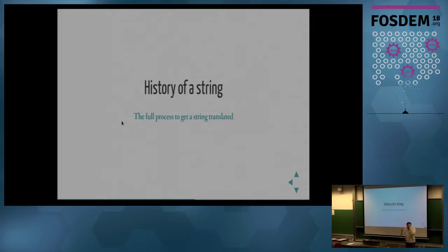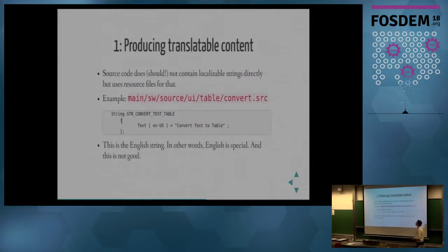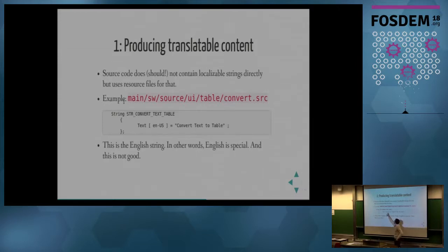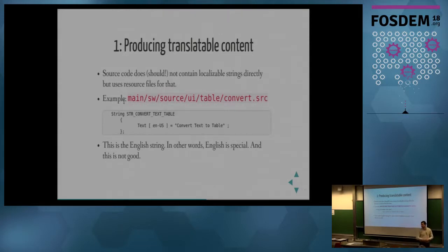Let's look at the history of a string as a practical example — the full process to get a string translated. You need to mark content as translatable. Basically, you have resource files and you use resource files to define a string — for example, a menu string saying 'Convert Text to Table.' One first major issue: this is the English string, written by programmers who are often not native speakers. Native English speakers have told us that some expressions read like the language of a lawyer from the 18th century.